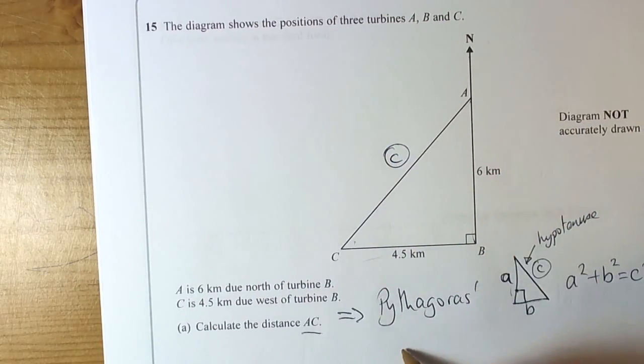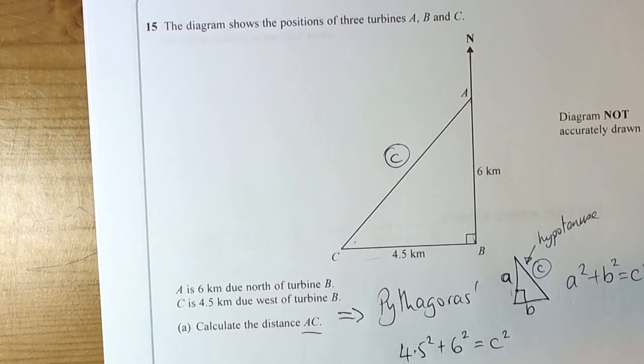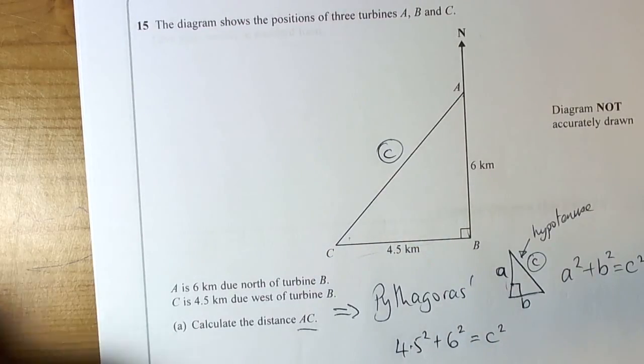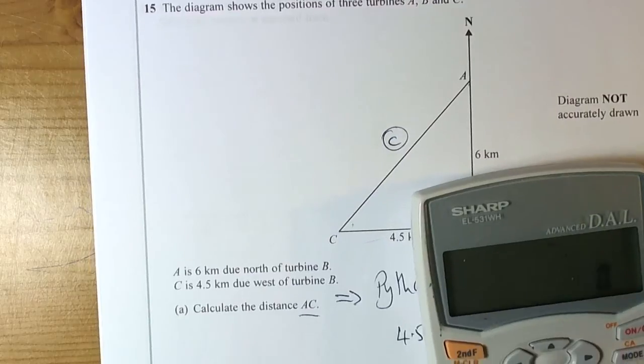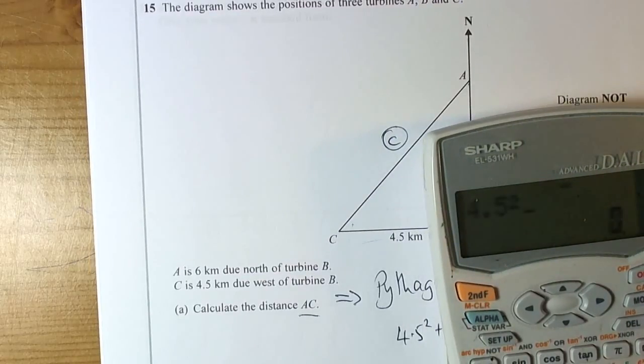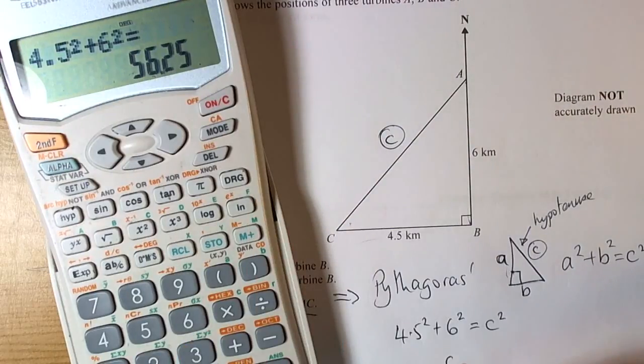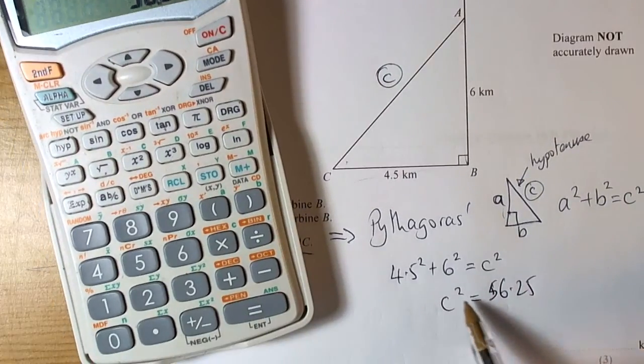In this particular example, we've got 4.5 squared plus 6 squared, and that is going to equal our C squared, which is our length that we need squared. When we do those values on our calculator, 4.5 squared plus 6 squared equals 56.25.